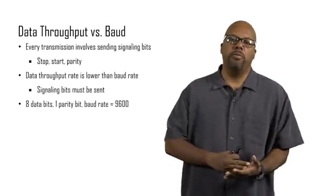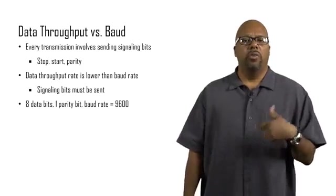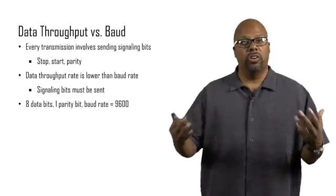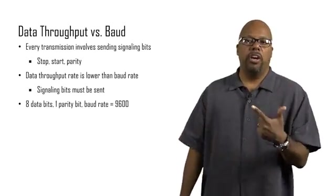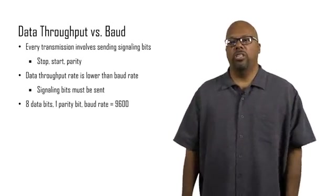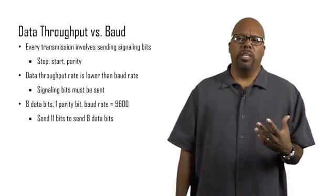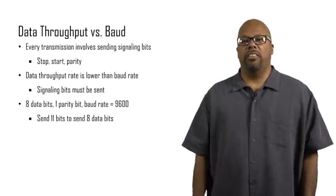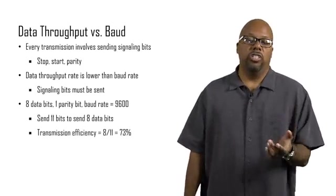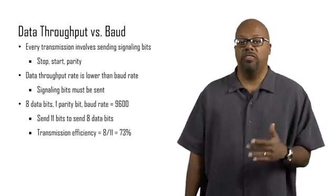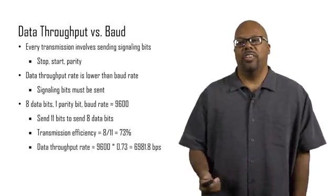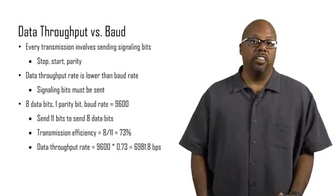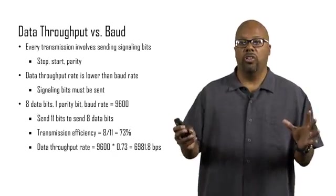These signaling bits have to be sent. Let's imagine an example where you're sending eight data bits, one parity bit, and one stop bit and start bit. You're sending eight data bits, but there are 11 actual bits that you have to send in order to send the eight. Because you've got to send the start bit, the parity bit, and the stop bit. Now, let's say the baud rate is 9600 baud. 9600 bits per second can be sent. But you're sending 11 bits to send eight data bits. So your data throughput would be less, because your transmission efficiency is only eight out of 11. So you get 73% efficiency out of that. Your data throughput rate is actually only 73% of 9600, so 6981 bits per second of data that you can actually send when you're using 9600 baud under those assumptions.